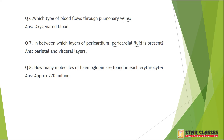Question 8: How many molecules of hemoglobin are found in each erythrocyte? The answer is approximately 270 to 300 million.